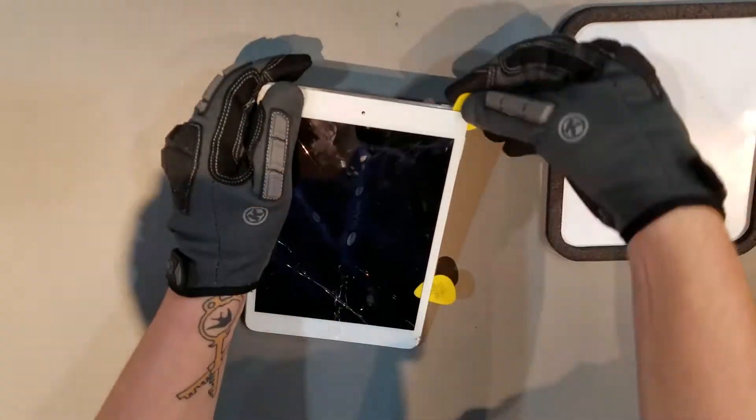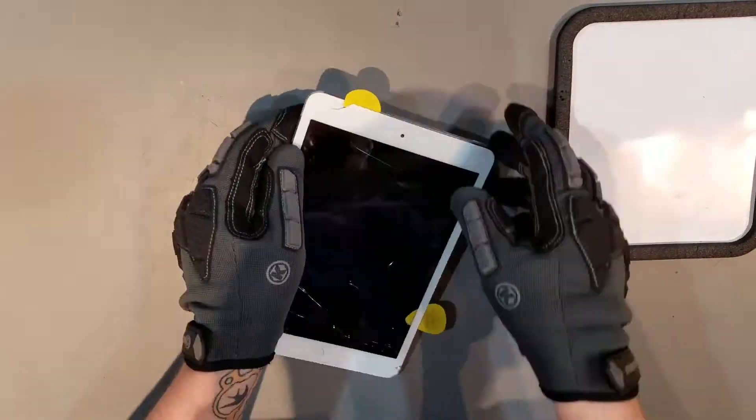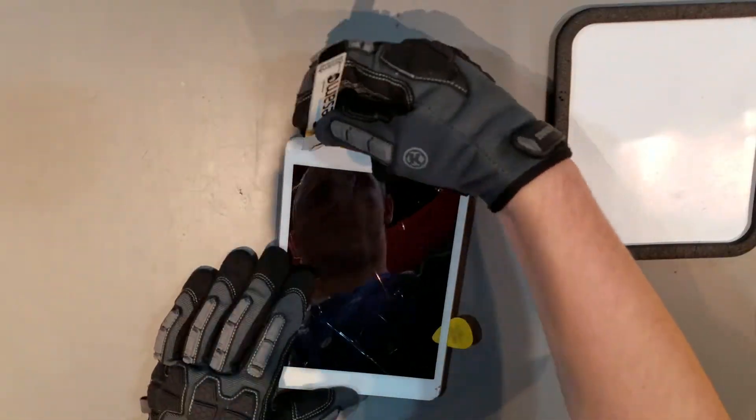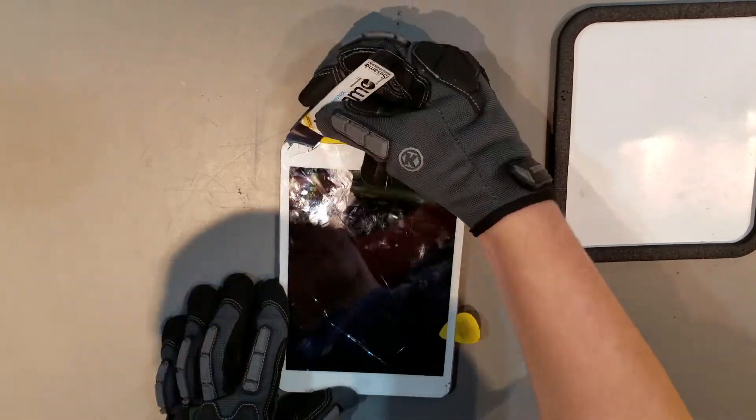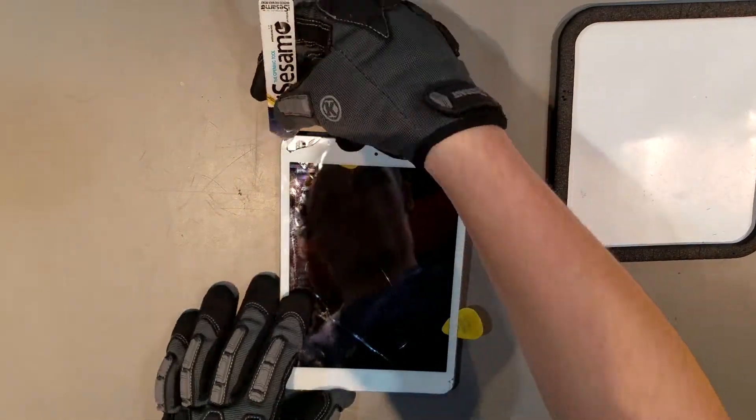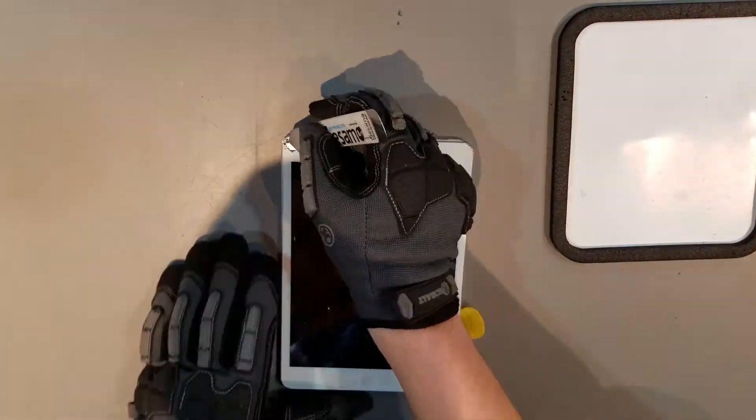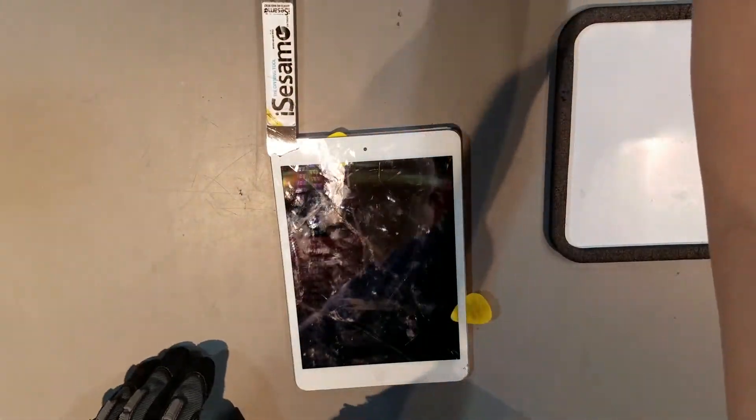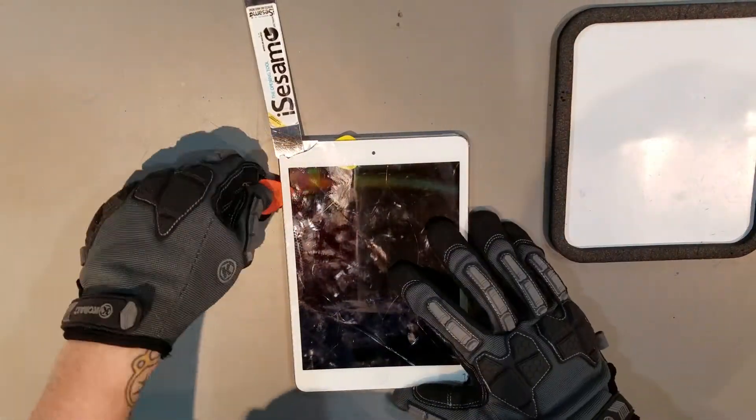For now, you'll want to only separate the top and the sides of the glass, as there are flex cables at the bottom that can be easily damaged. While going around the iPad, if there are any smaller pieces of glass, you'll want to remove those now before removing the largest piece. Removing the smaller pieces of glass after removing the largest one puts the LCD at more risk for being damaged.